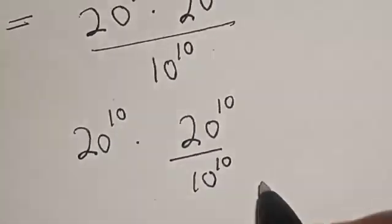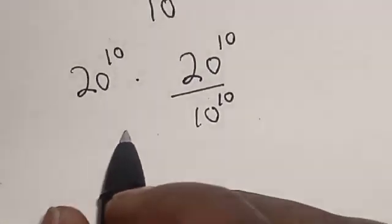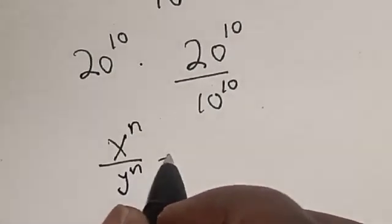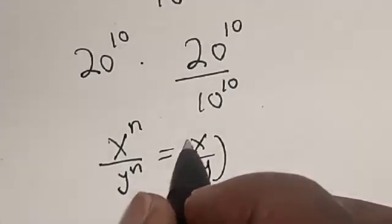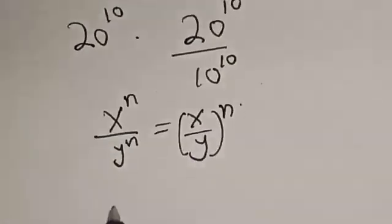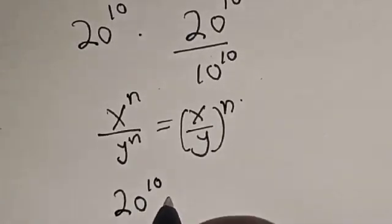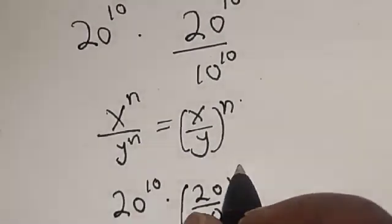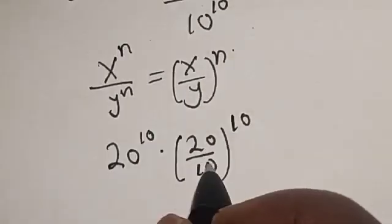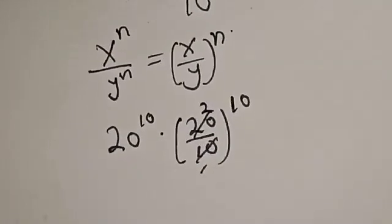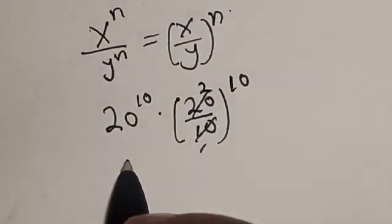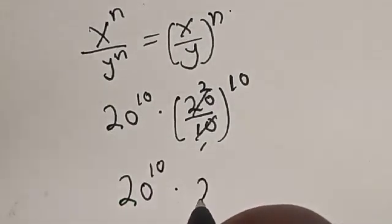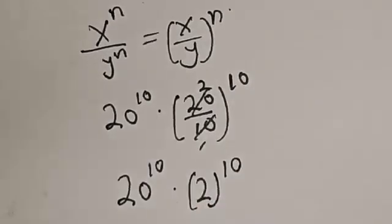Note this rule: if you have s raised to power n divided by y raised to power n, this equals (s over y) raised to power n. So we get 20 raised to power 10 multiplied by (20 divided by 10) raised to power 10, which gives 20 raised to power 10 multiplied by 2 raised to power 10.